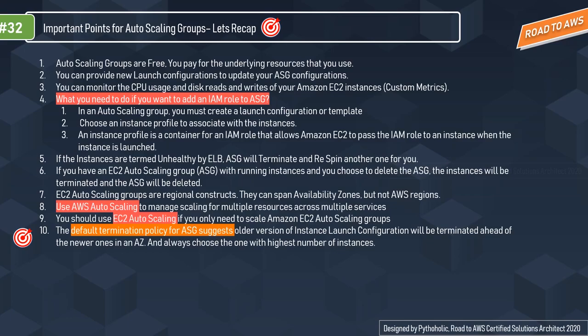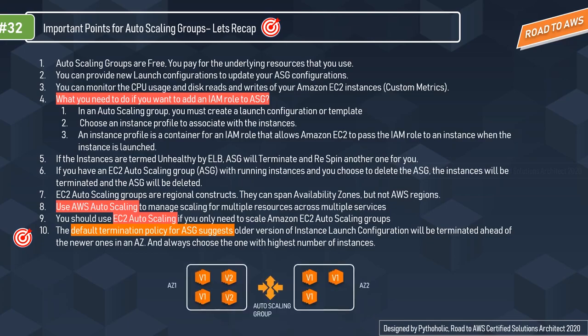The default termination policy for ASG terminates the older version of the launch configuration ahead of newer ones in an availability zone, and always chooses the AZ with the highest number of instances. For example, if you have two AZs - one with three v1 instances and another with two v2 and two v1 instances - AWS smartly deletes the older config while maintaining balance between AZs.